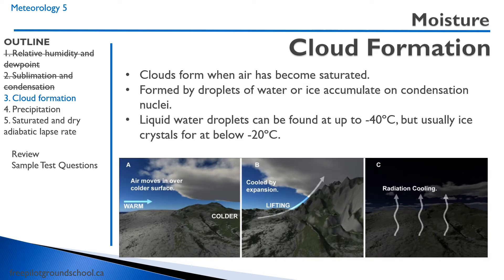Clouds form when air has become saturated. Unsaturated air will not form clouds. Clouds are formed when droplets of water or ice accumulate on condensation nuclei — so condensation nuclei are another requirement for cloud formation. Liquid water droplets can be found at up to minus 40 degrees Celsius, but usually ice crystals form below minus 20 degrees.